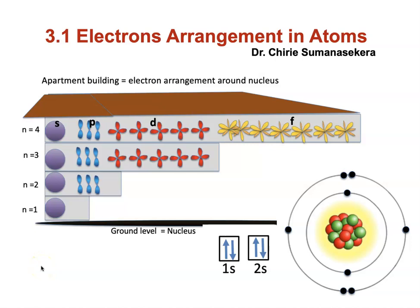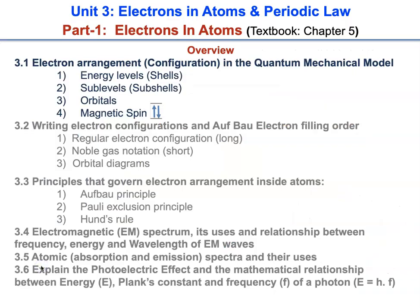This is 3.1 electrons arrangements in atoms, the first part of unit 3 which is called electrons in atoms and periodic law. I have divided this unit into two parts. This is the breakdown of part 1, electrons in atoms, textbook chapter number 5. The overview is divided into six sections, 3.1 through 3.6.